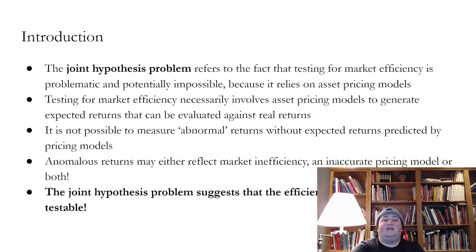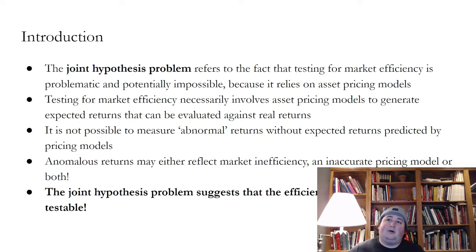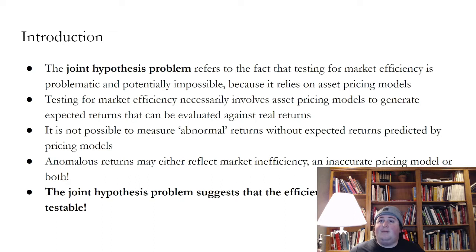The joint hypothesis problem suggests that the efficient market hypothesis is not testable. On the one hand, we have the efficient market hypothesis. On the other hand, we have these asset pricing models. What we'd like to do is test the efficient market hypothesis and ask: is the market efficient? But in order to do that, we have to have a reliable asset pricing model. The problem is we don't know if our asset pricing models are correct.